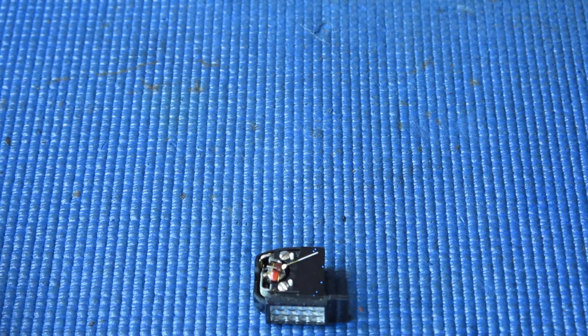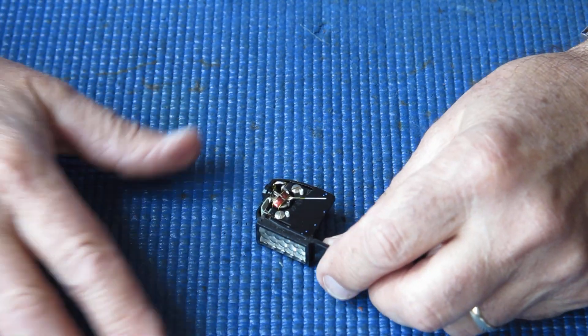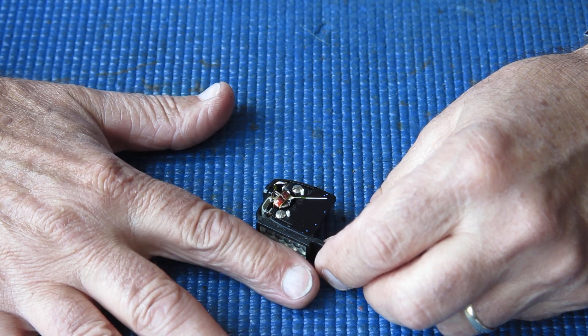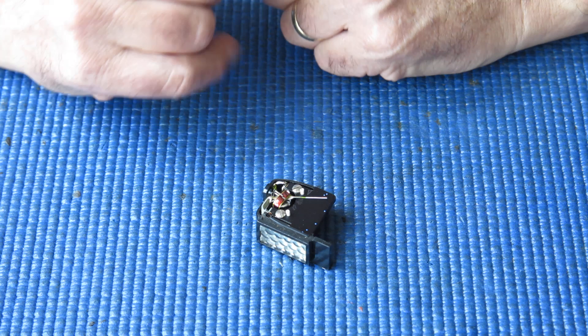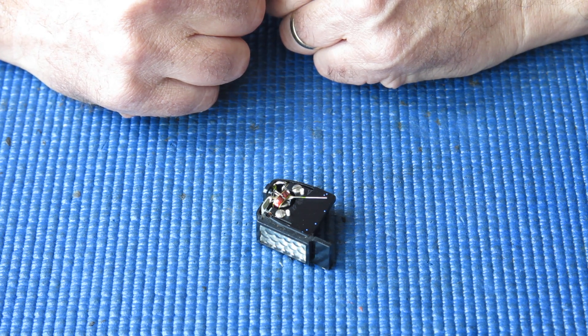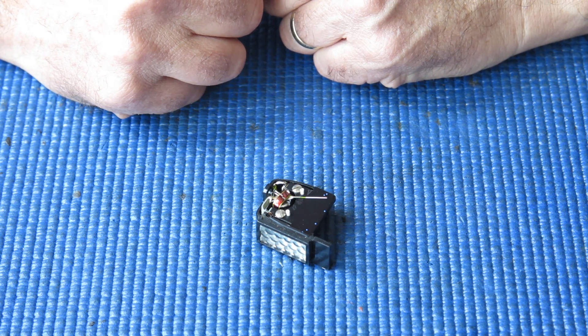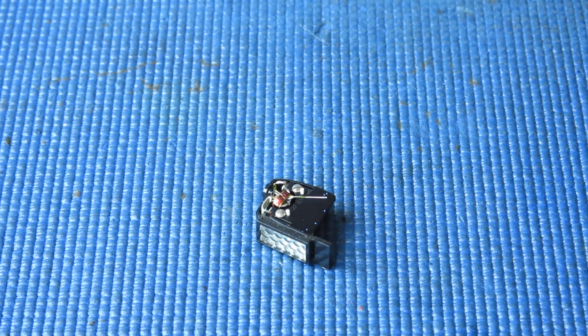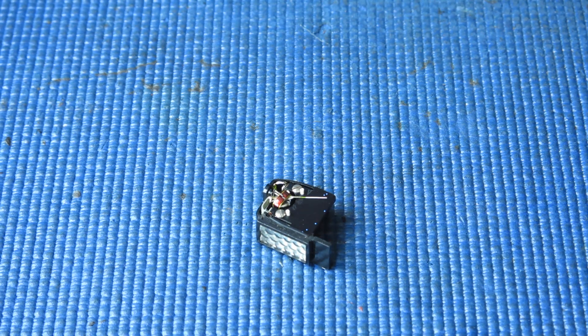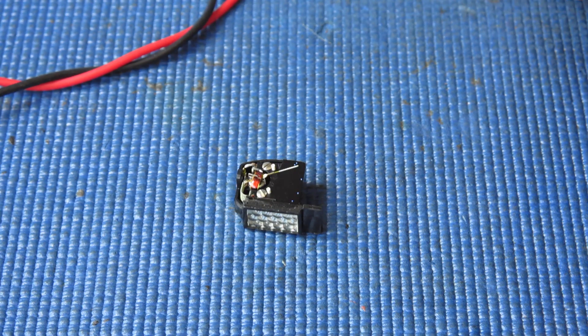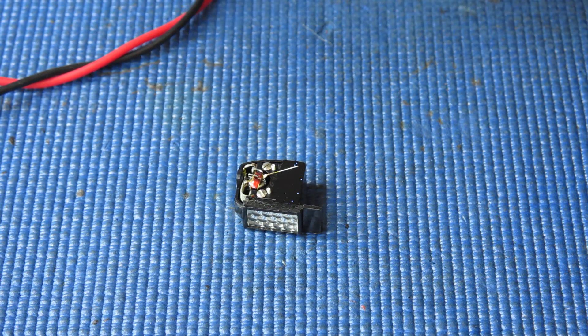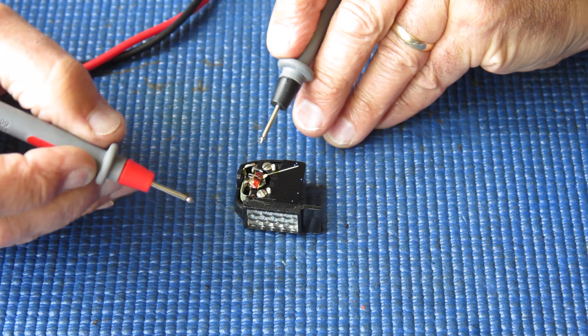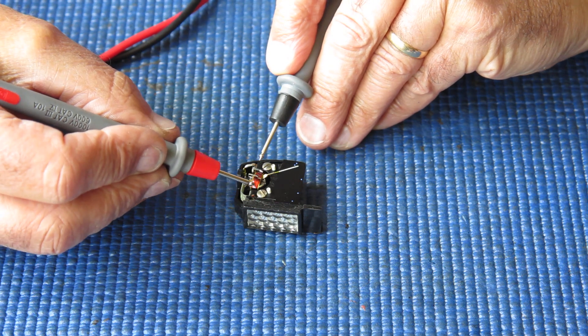So now, we've determined that the meter doesn't appear to respond to light. I need to find out whether the movement itself is actually lively, see if it actually responds to electricity. So I'm about to get my multimeter onto that. I've got my meter here, set to continuity. And I'm just going to touch the contacts.